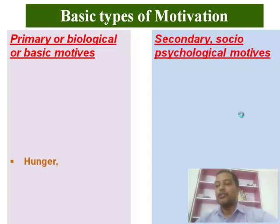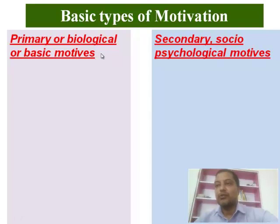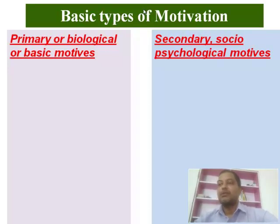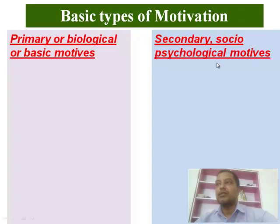Biological motivation is where the physical body pushes itself — whatever it needs to grow, from birth. The physical organism pushes the body naturally. These are natural motives — we cannot avoid them. When they arise, we have to provide for them. For secondary or socio-psychological motives, society influences the different decisions we make, and we try to act accordingly.